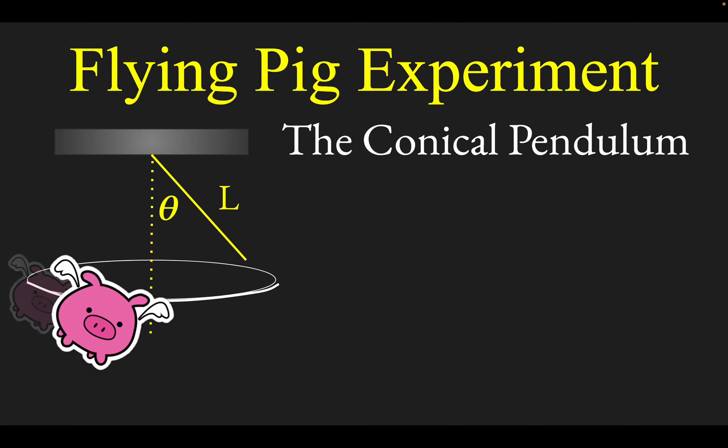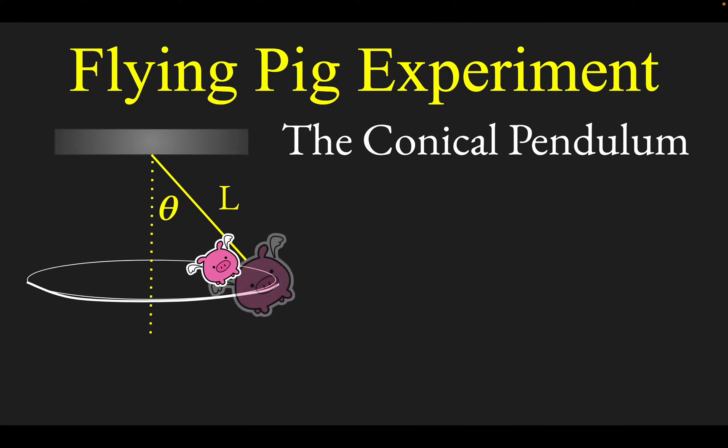In this situation you have this pig that cruises around in a circular path. We'll start by looking at the forces that act on the pig. You'd have gravity acting straight downward and tension pulling along the string.